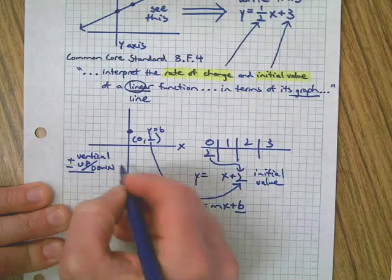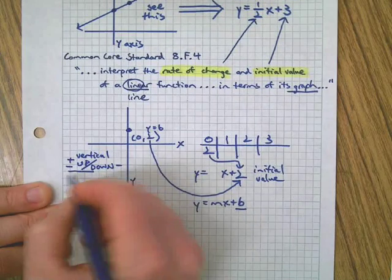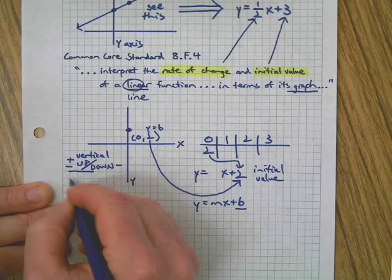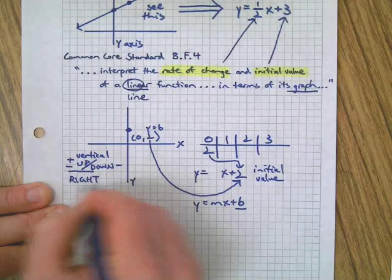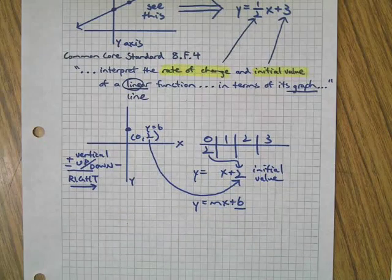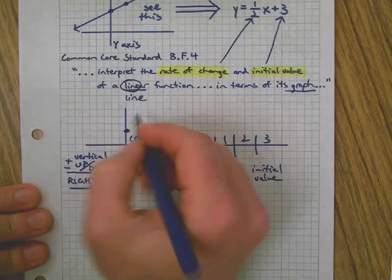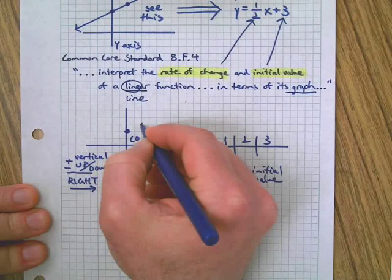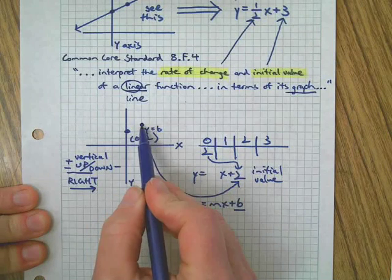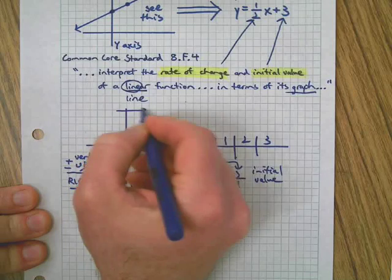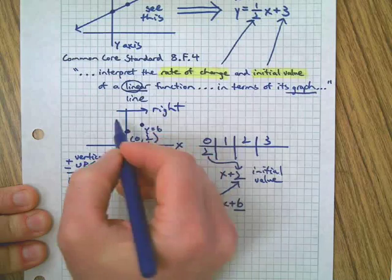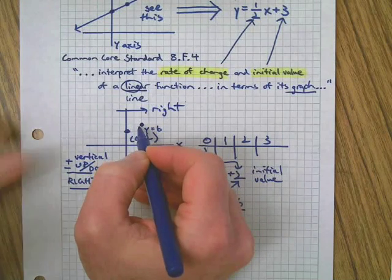That means up or down, right? Up if it's positive, down if it's negative. And then the bottom number, the numerator represents movement to the right only. Not to the left or right, to the right. Very important. So when we're given our example here that we had up above, we had another dot right here. So let's compare our initial value to the second dot. And this is as we're moving to the right. Remember, very important, direction. As we're moving to the right, how do we get from here to here?